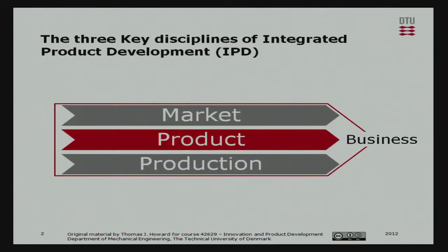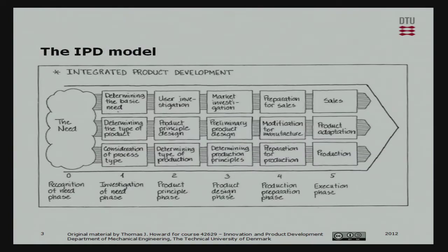Just to recap, those are the three key disciplines, and it can be broken down into more detail into these different stages of the integrated product development model. If you've seen some of the models we introduced in the very first lecture on product development, you'll see typical phases like these of a stage gate process. Typically there'll be a stage, then a gate, a stage and another gate, and so on. At each of those gates you have to make a decision. You can do exactly the same with the integrated product development process, but there are certain stages you'll have at the three key disciplines.